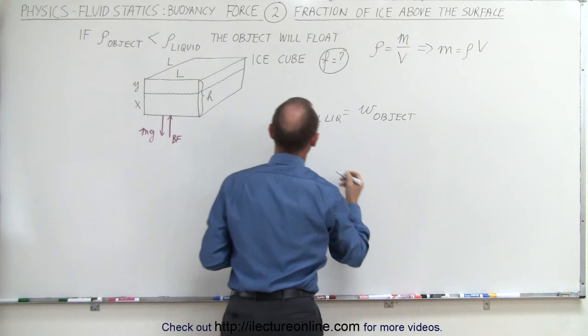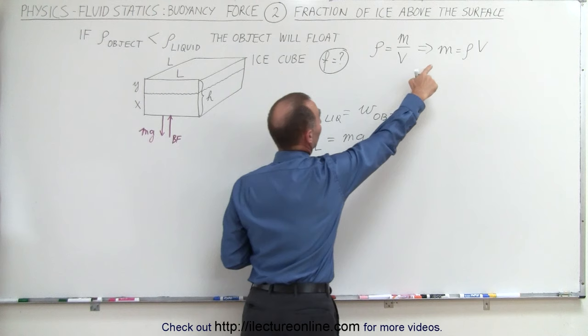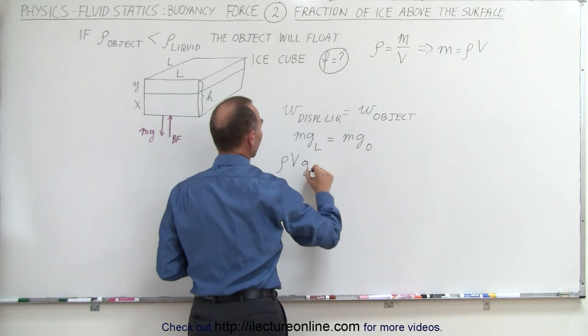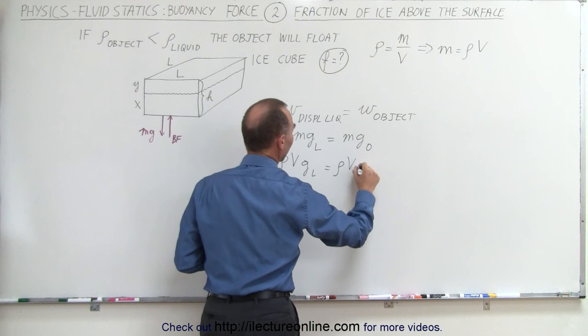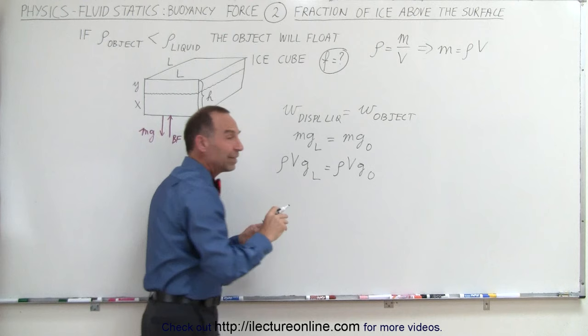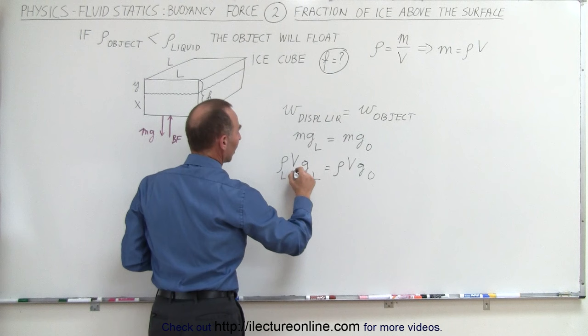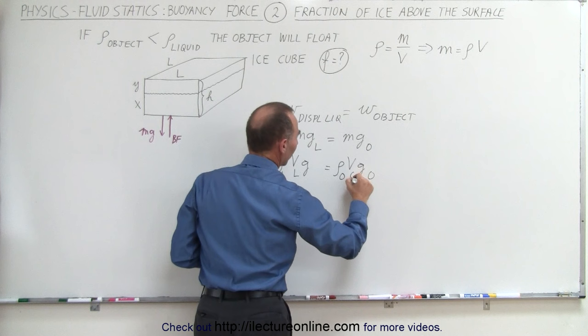We can write the weight of the displaced liquid as m·g of the liquid (subscript l), equal to m·g of the object. Using the substitution that mass equals density times volume, we get: density times volume times g of the liquid equals density times volume times g of the object. Be careful — the volume here is the volume of the displaced liquid, which is only the submerged portion, not the volume of the whole object. So: density of the liquid × volume of the displaced liquid × g = density of the object × volume of the object × g.